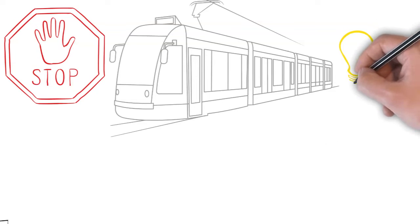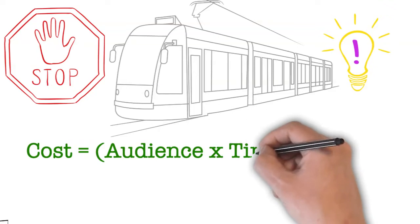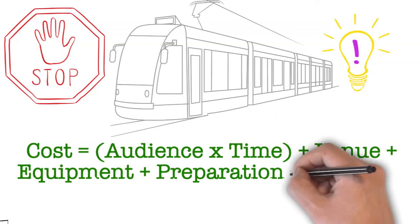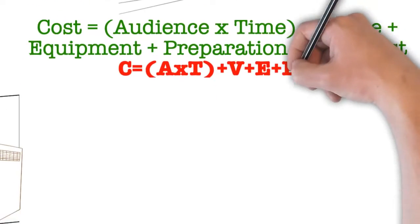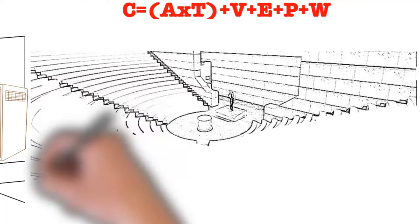If the presentation equation is true, then it shows that giving a presentation is the most expensive form of communication there is, and yet it was developed thousands of years ago when gathering people together in space and time was the most efficient way to share information.